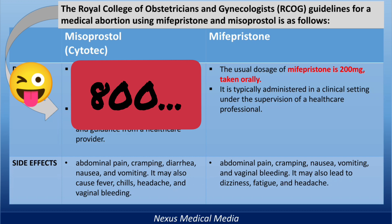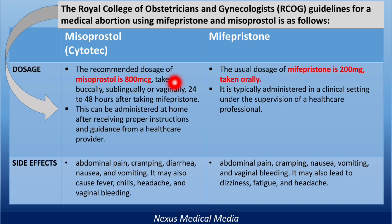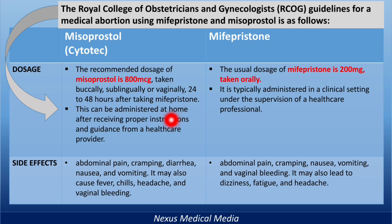After this, 24 to 48 hours later — some references say 12 hours later — you give misoprostol 400 micrograms, taken buccally, sublingually, or vaginally. This can be administered even at home after receiving proper instructions and guidance from a healthcare provider.